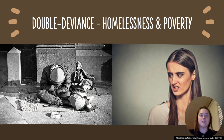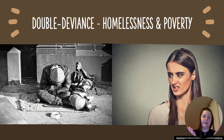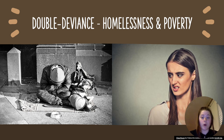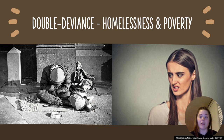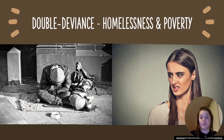Double deviance is a term used to explain how something can both be viewed as deviant and it can also cause deviance. Being homeless and or poor breaks our social norm of achieving the American dream, and when we break a social norm, we're committing an act of deviance. Similarly, being homeless and or poor can also be a cause of deviance — someone who is homeless and has no money may be forced to steal food, which is an act of deviance, simply to try and survive.